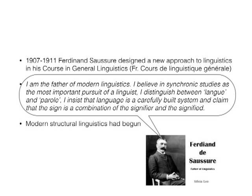Saussure distinguished between langue and parole — and Chomsky later came with a similar dichotomy: competence and performance. Saussure also insisted that language is a carefully built system, and he claimed that the linguistic sign is a combination of the signifier and the signified. Modern structural linguistics had begun with him.